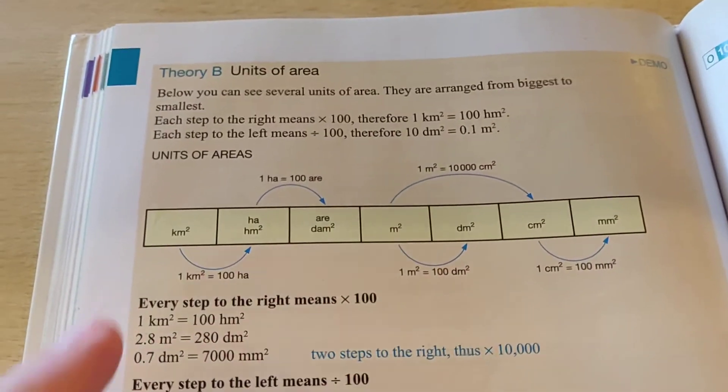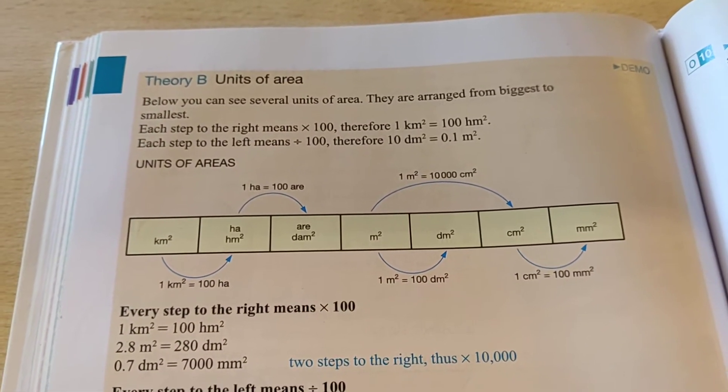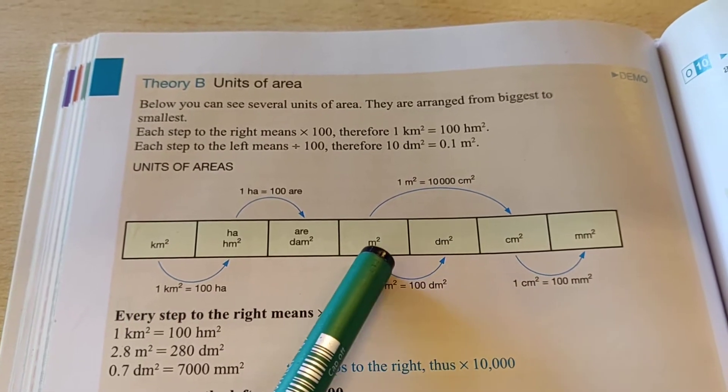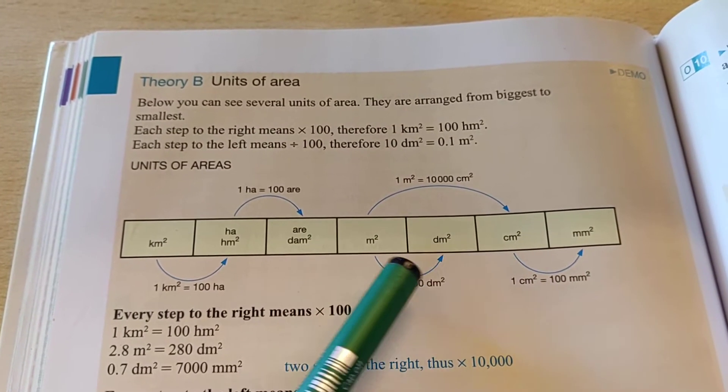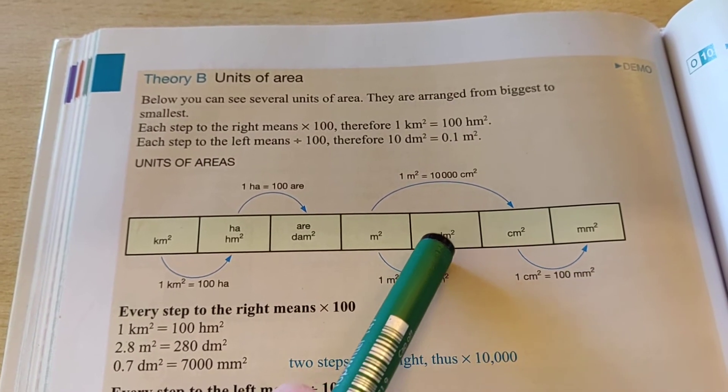The new table that we have here is about areas. So we have a squared kilometer, and a squared meter, and a squared decimeter, all of that. This works differently, because now instead of doing times 10, you have to do times 100. So times 100 in this direction, and divided by 100 in this direction.